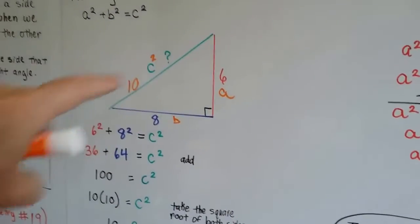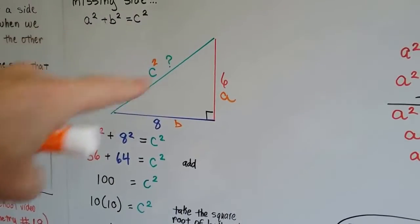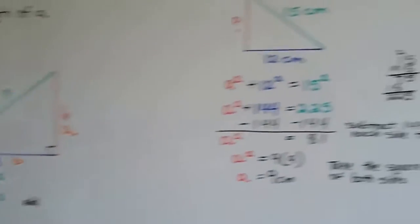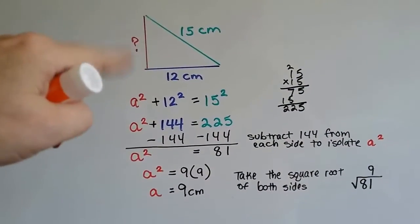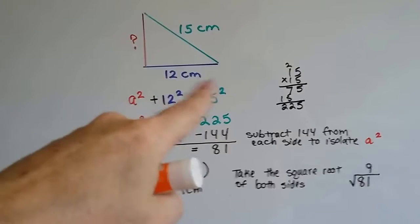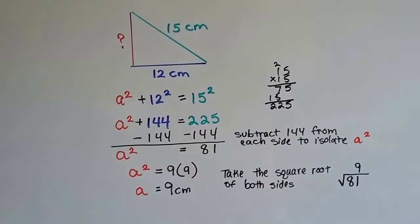That was missing the length of the hypotenuse, the side opposite the right angle. Now let's see what happens if we're missing side a. We have side b, that's 12 centimeters, and we know the hypotenuse is 15.